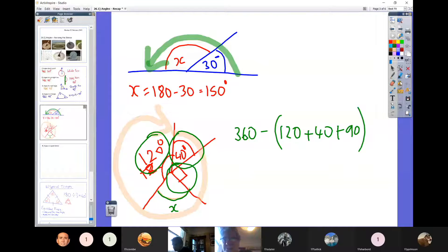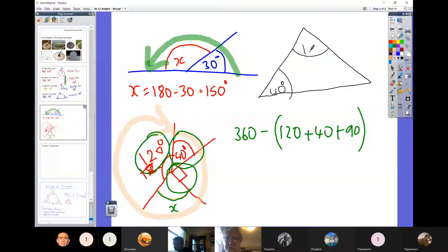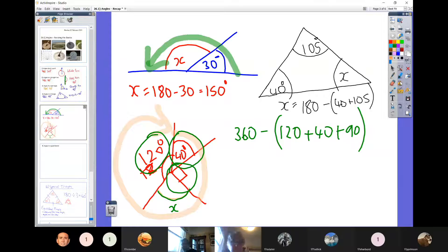You might obviously then have angles in a triangle. So let's just squeeze this one in at the top. Let's say that was 40 degrees. Let's say that was 105 degrees. And we had to work out that one. Well, because angles in a triangle add up to 180, to work out X there, you're going to do X is equal to 180 and you take away the 40 added together with 105.